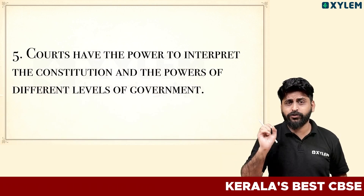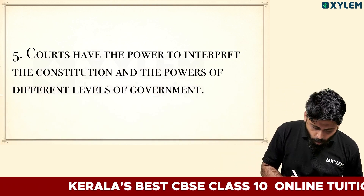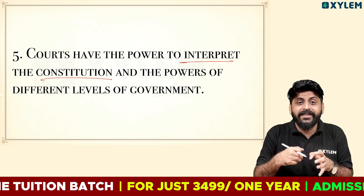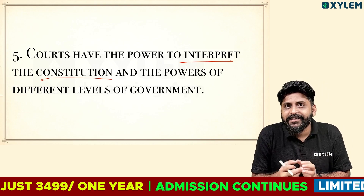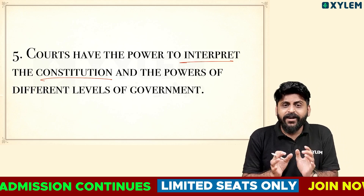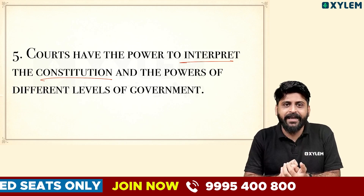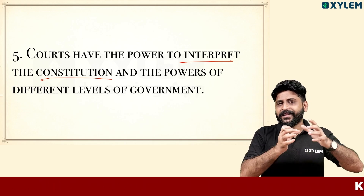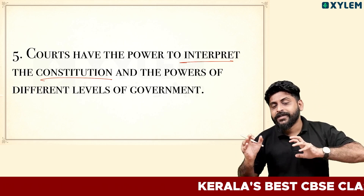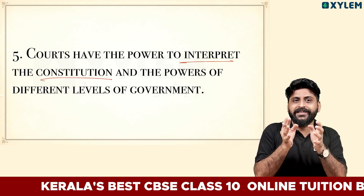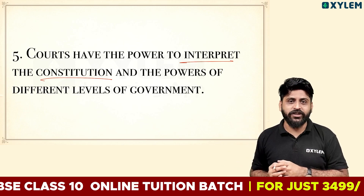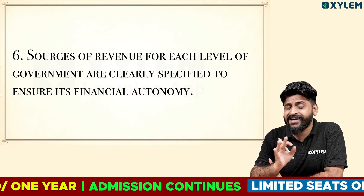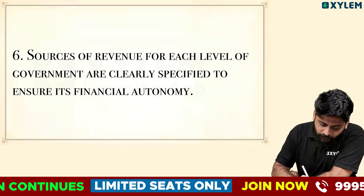The courts have the power to interpret the constitution and the powers of different levels of government. This is the fifth feature. The sixth feature: the sources of revenue for each level of government are clearly specified to ensure its financial autonomy.